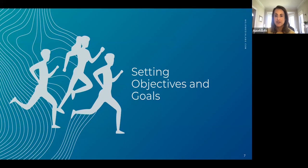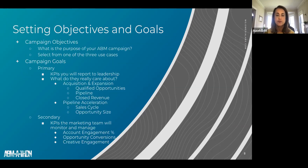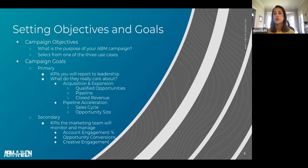In terms of setting campaign objectives and goals, the first thing we do is identify which use case the campaign falls into: new logo acquisition, pipeline acceleration, or customer expansion. Then we think about campaign goals as primary and secondary. Primary goals are the uber goals you report up to leadership — the KPIs that are really moving the needle, very closely tied to revenue.